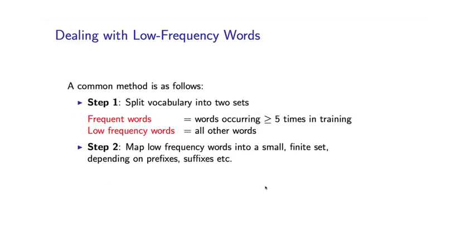So a common method which is used is as follows. So in the first step, we split the vocabulary into two different sets. We'll do this as follows. I'll define so-called frequent words to be any word occurring greater than some threshold. So for example, a typical value might be 5. We define a frequent word to be any word occurring 5 times or more in training.